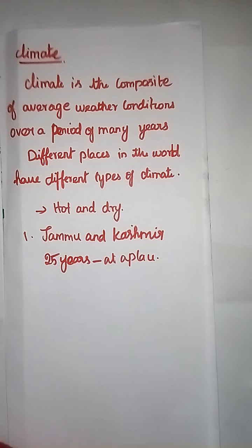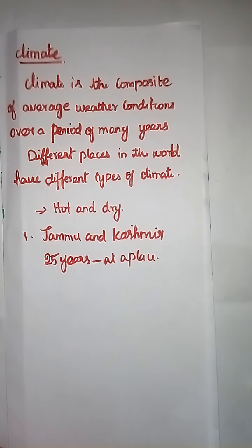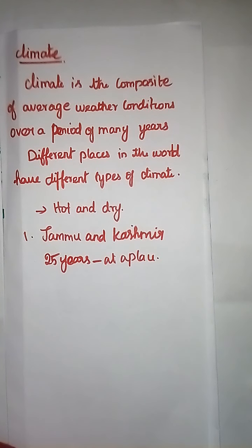The north eastern part of India receives rain for a major part of the year — it is wet and can be very hot or very cool. In today's class, what we learned: the second subtopic is Climate. Climate is the composite of average weather conditions over a period of many years, and different places in the world have different types of climate.